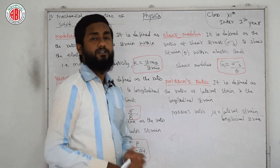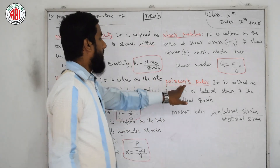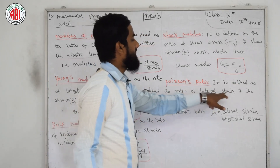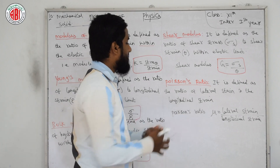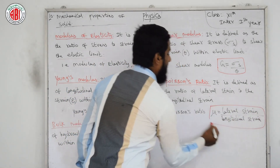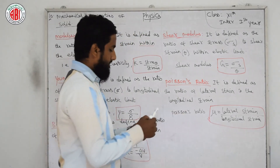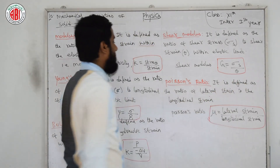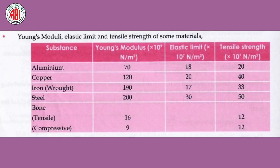Hope you have copied those definitions. We have one more small definition: Poisson's ratio. It is defined as the ratio of lateral strain to longitudinal strain. Here, mu (μ) = lateral strain / longitudinal strain. Pause the video if you need to copy this down.